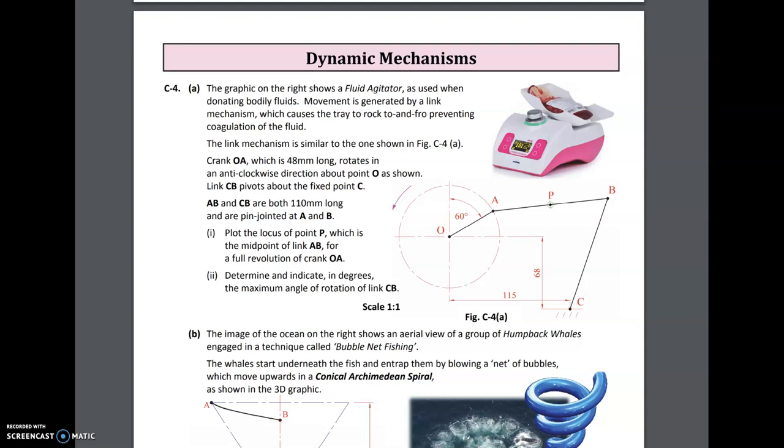Part A: The graphic on the right shows the fluid agitator as used when donating blood. Fluids movement is generated by a link mechanism which causes the tray to rock to and fro, preventing coagulation of the fluid.